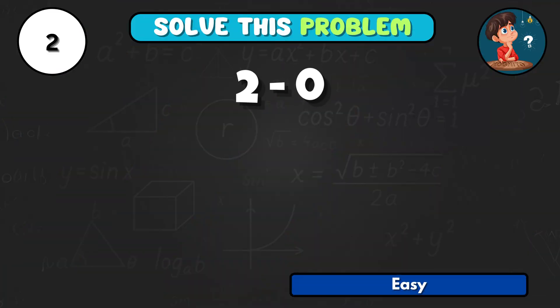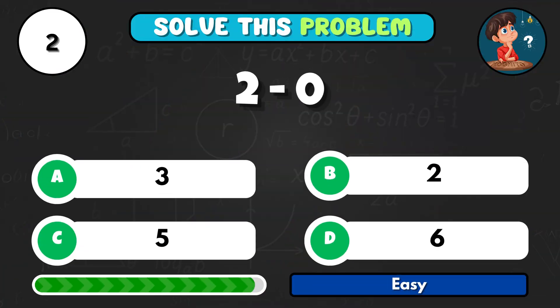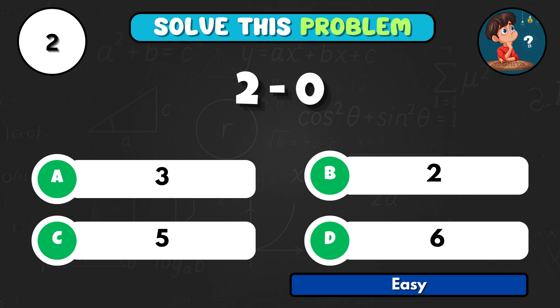If you take 2 and subtract 0, what do you get? That gives you B2.